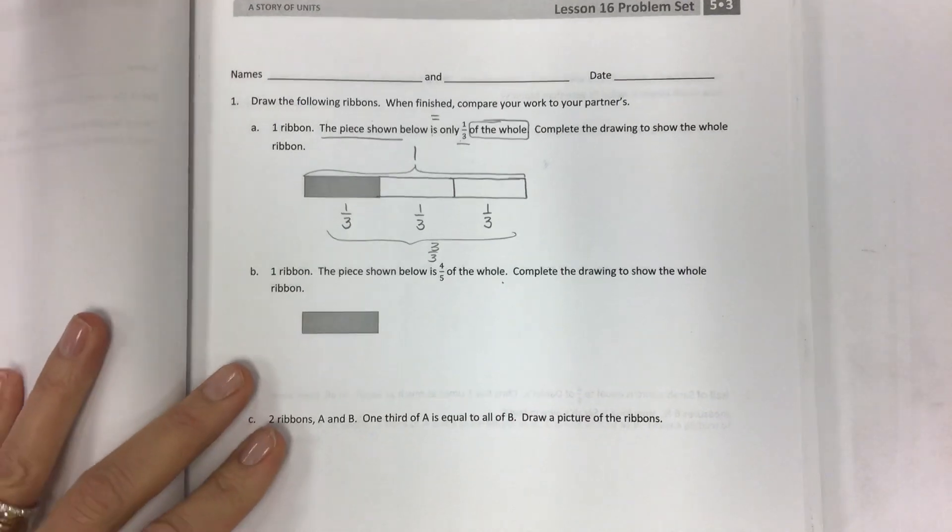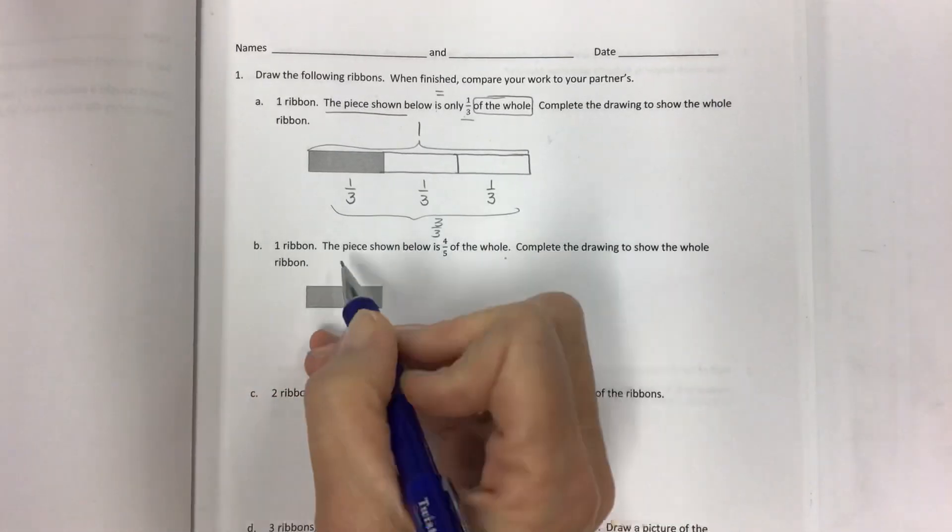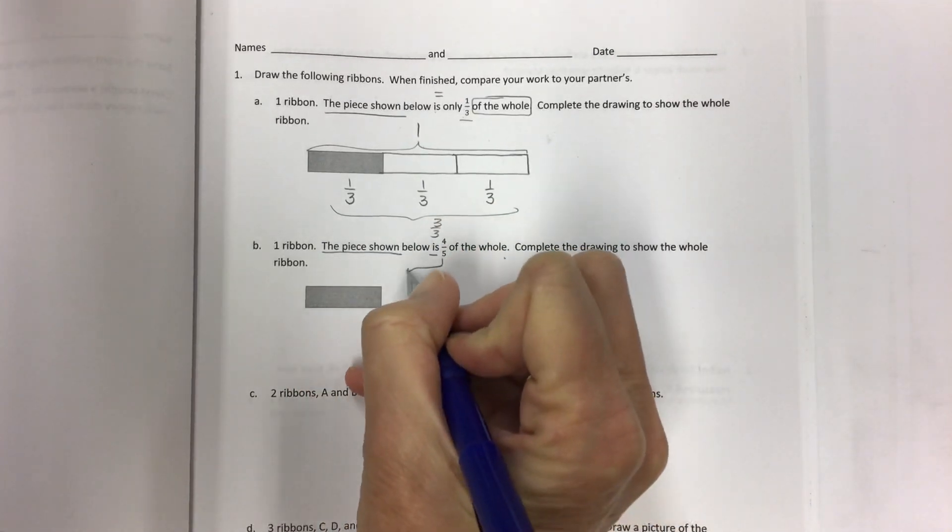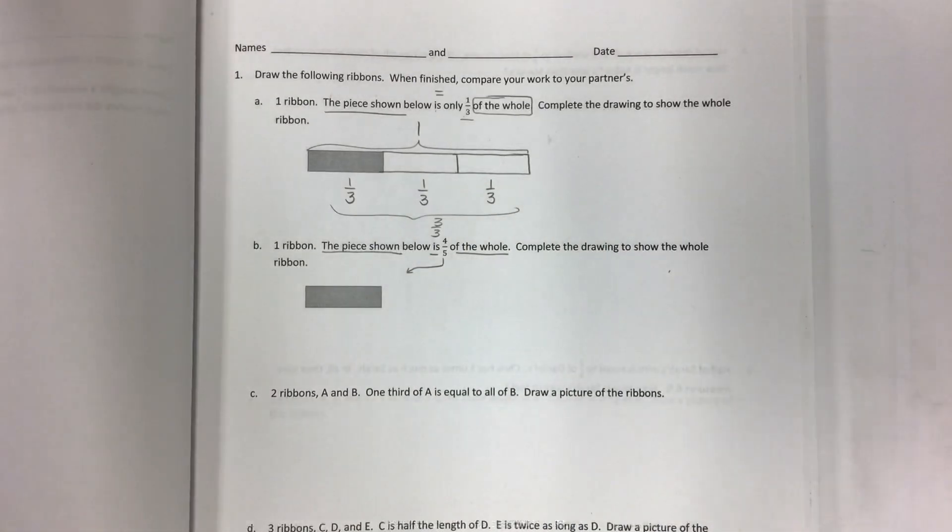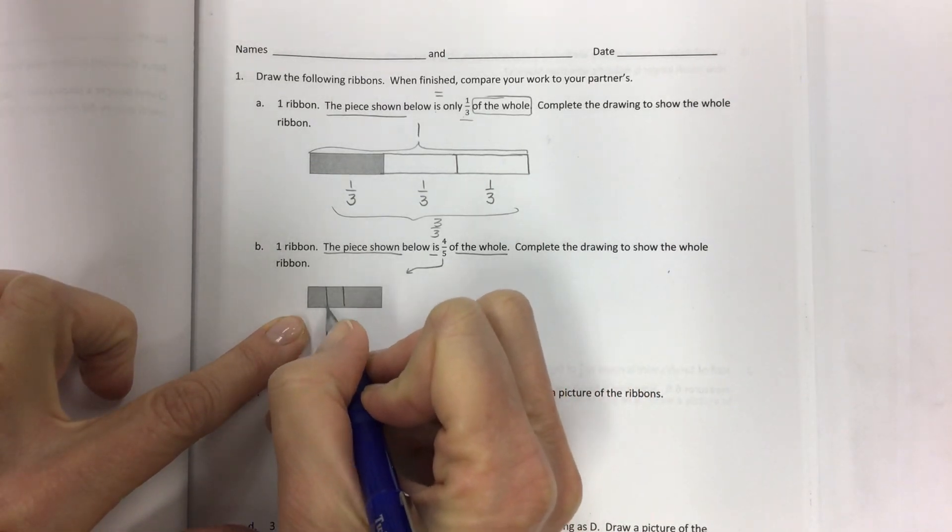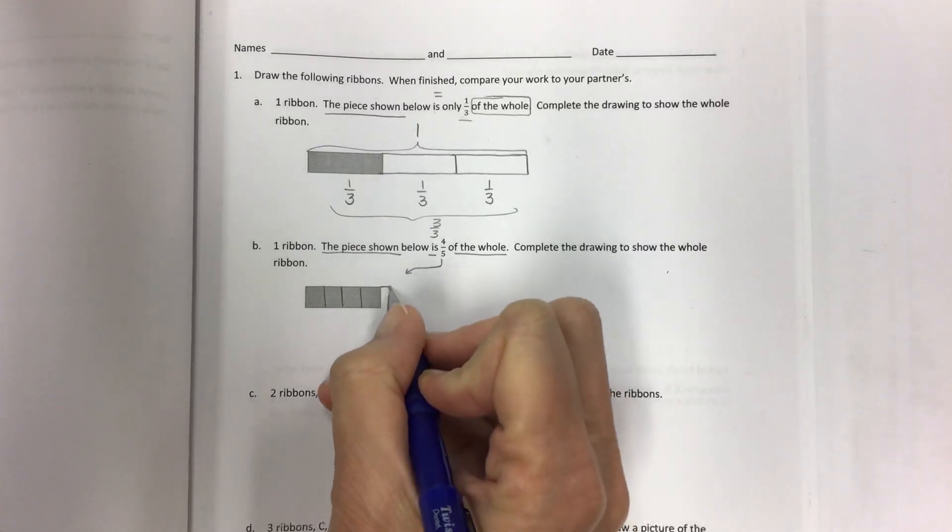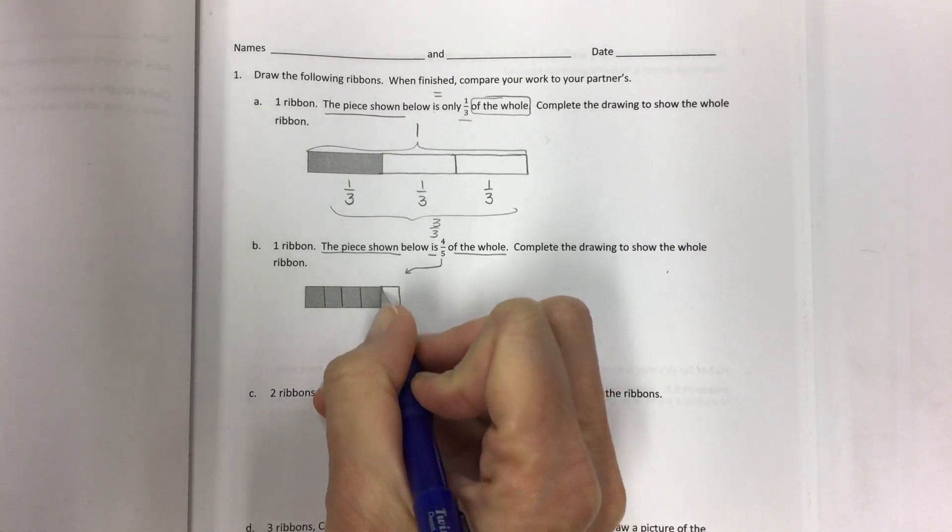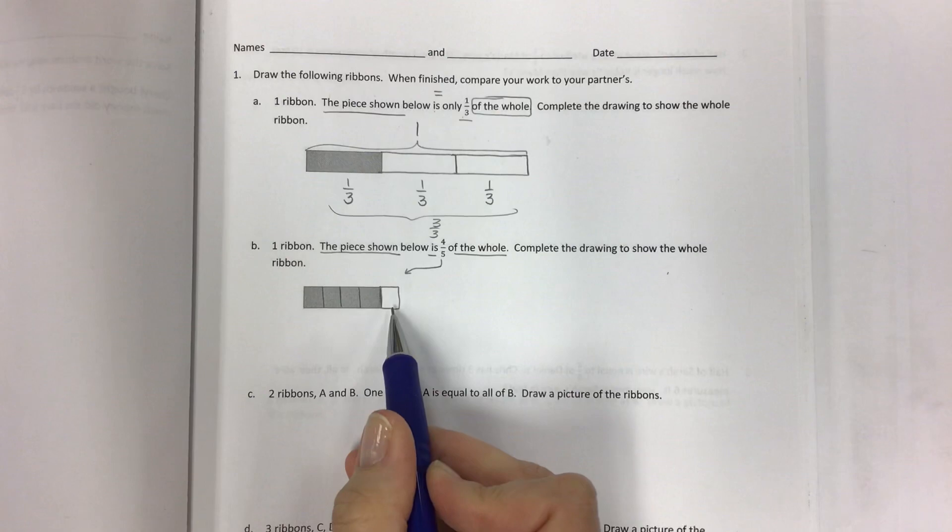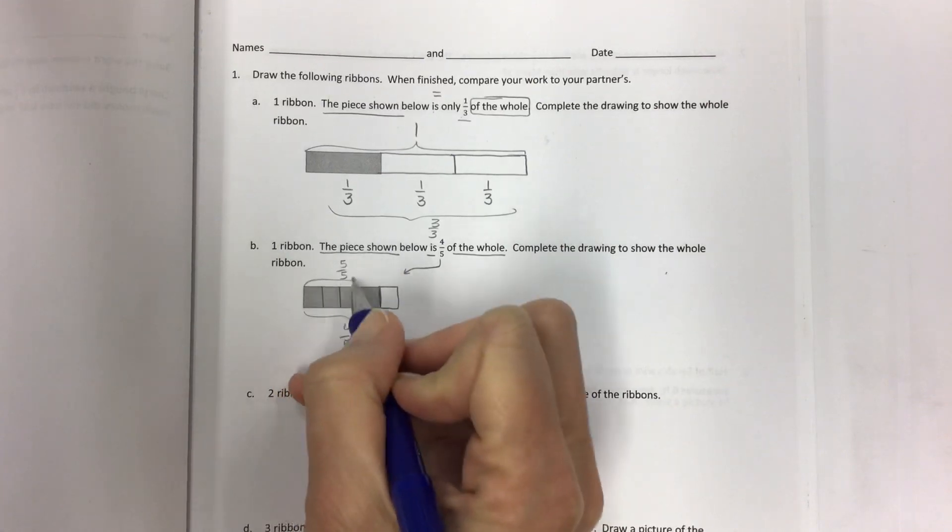One ribbon right here, but this time the piece shown below is four-fifths of the whole. So now this is four pieces. I'm going to divide within this ribbon, and what I'm missing is the fifth piece. Now this is what your ribbon should look like: four out of five. This is four-fifths, and this is five-fifths which means one.